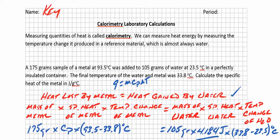The final temperature of the water and the metal was 33.8 degrees Celsius. That means that the metal must have cooled down. It went from 93.5 to 33.8, and the water must have heated up. It went from 23.5 to 33.8. Calculate the specific heat of the metal in joules per gram per degree Celsius.